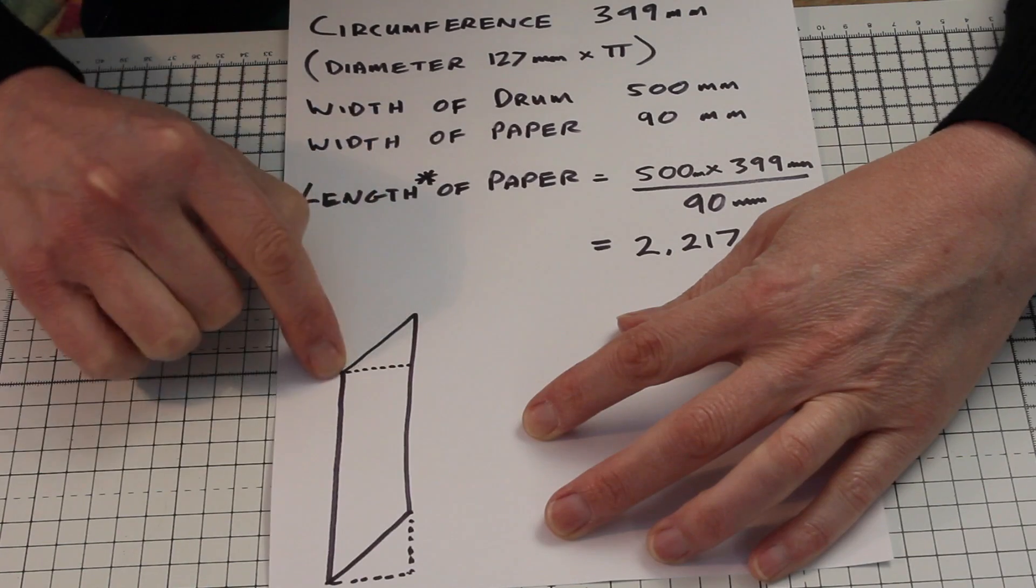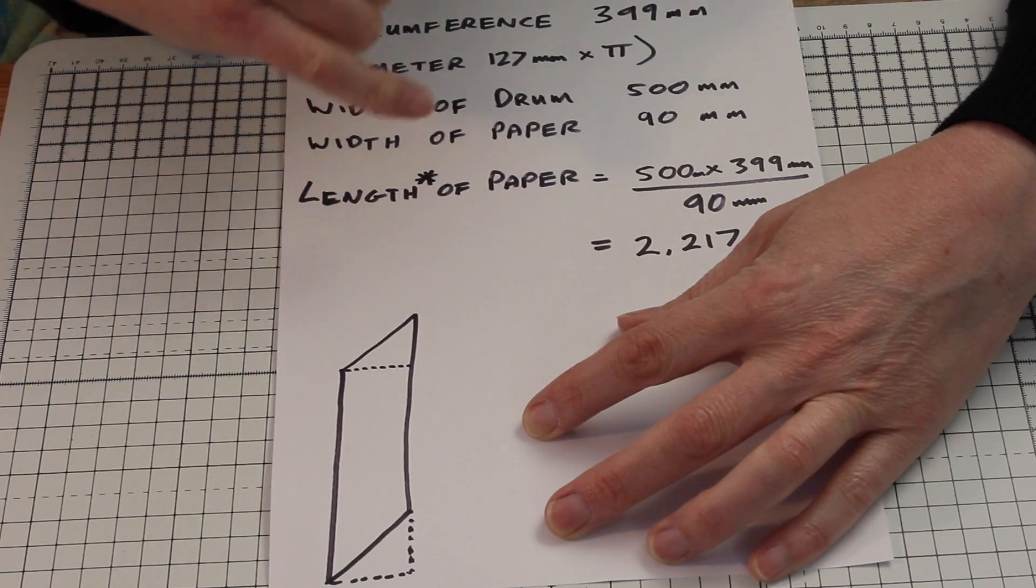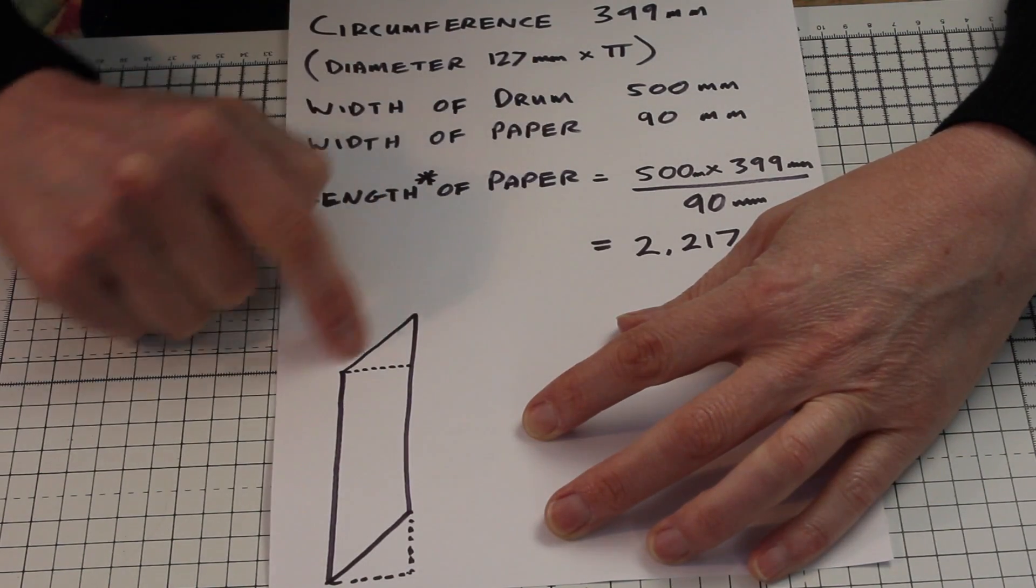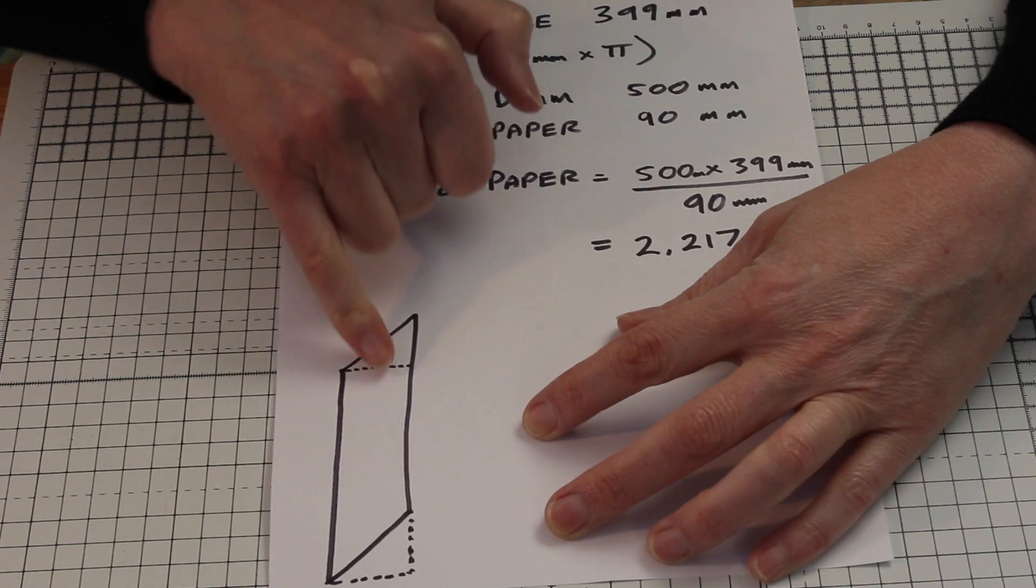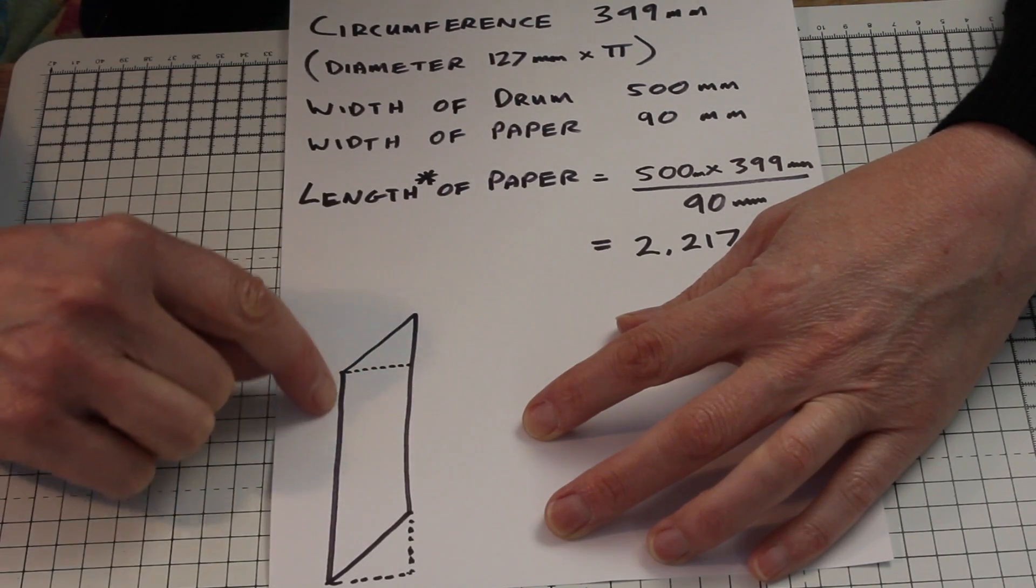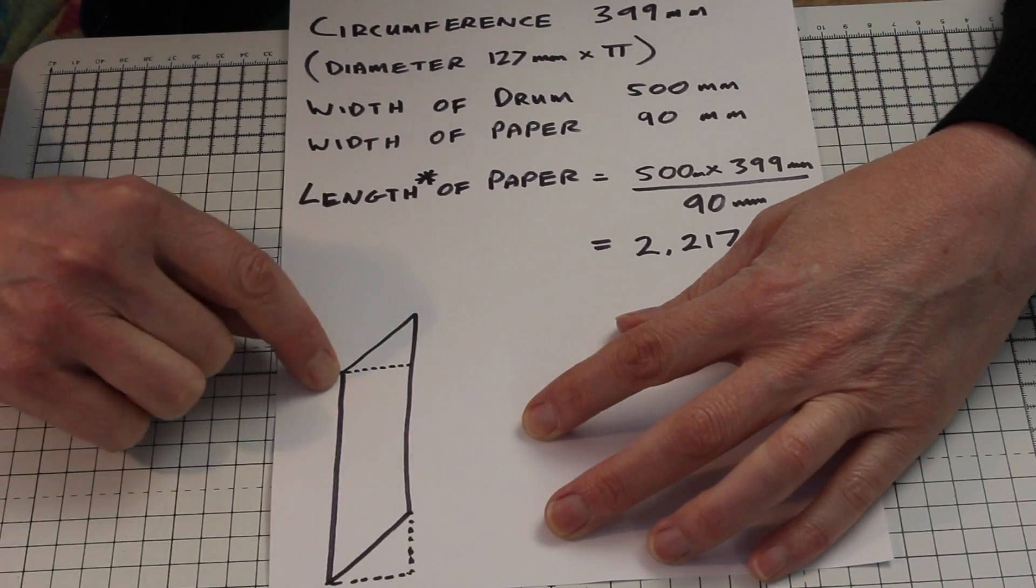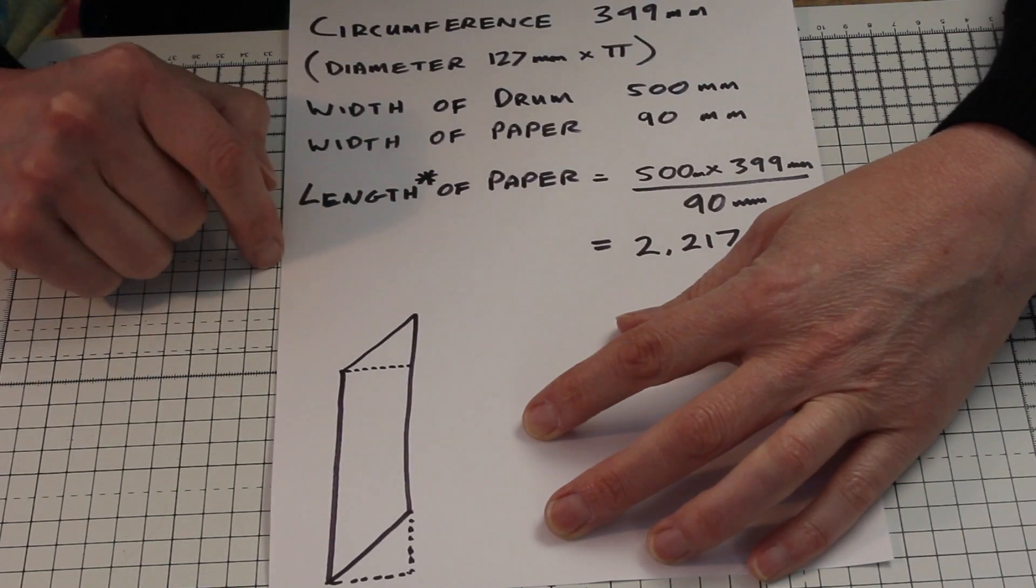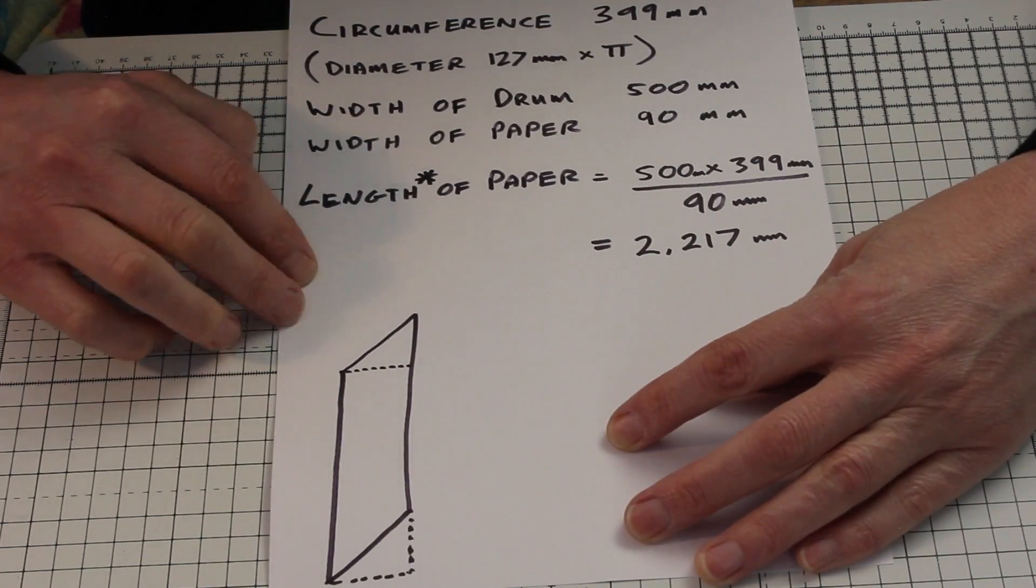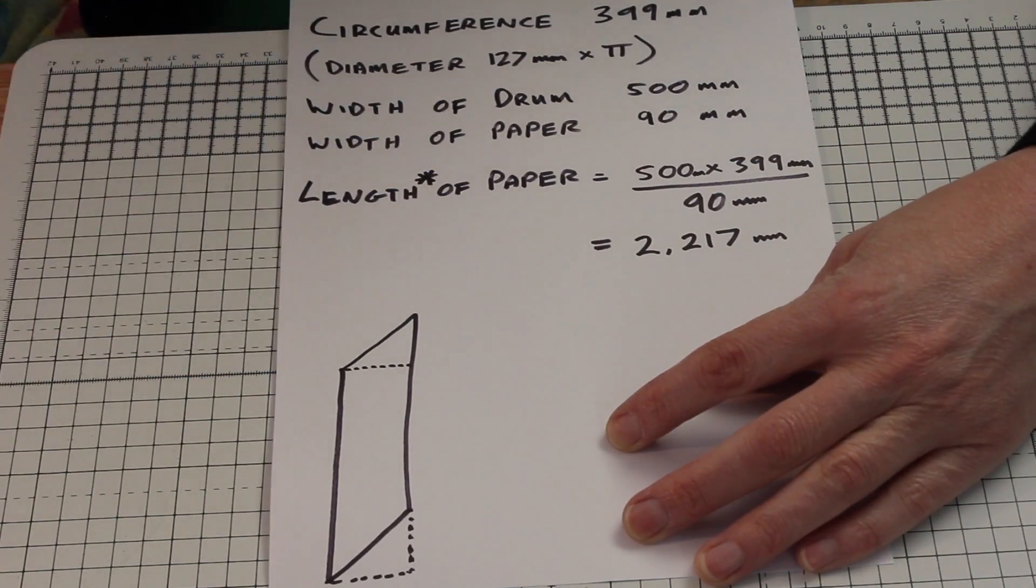So this gives us all that we need to know. We have this length here is our 399 millimeter circumference. The width is the width of the sandpaper. And the base of our parallelogram is 2,217 meters. So let's go do some cutting.